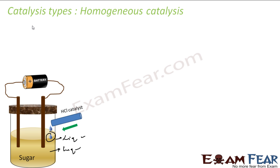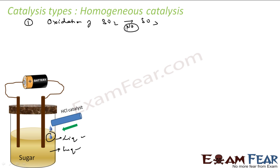The first example is oxidation of sulfur dioxide to sulfur trioxide. For this we use nitric oxide (NO) as the catalyst. Sulfur dioxide is gas, nitric oxide is gas, and even the product sulfur trioxide is gas. So this is an example of homogeneous catalysis.